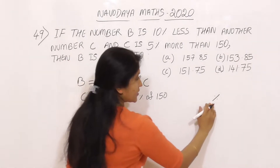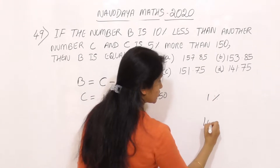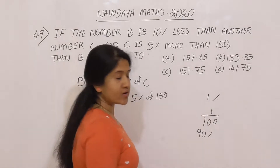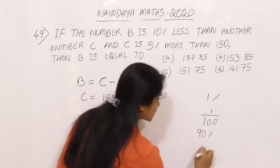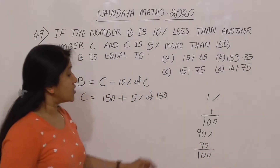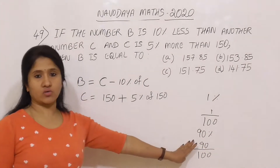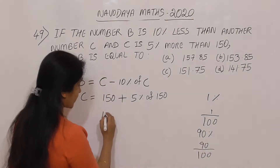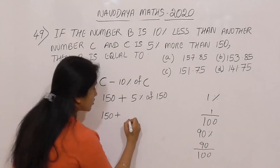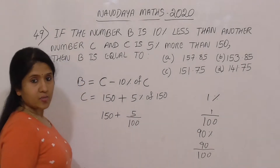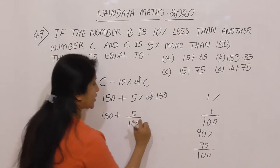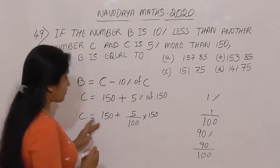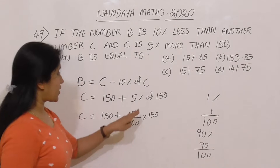Now let's calculate. 5% is equal to 5 by 100. So C equals 150 plus 5 by 100 into 150. We calculate 5% of 150: that is 5 divided by 100 multiplied by 150.